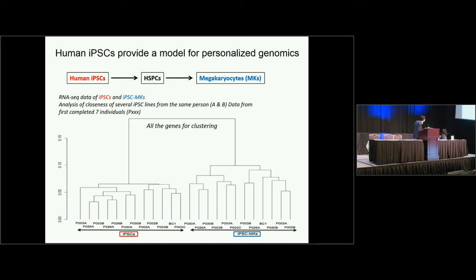The data I'm showing is RNA sequencing data from iPS cells and iPS cell-derived megakaryocytes from seven individuals, where some individuals contributed multiple iPS cell lines. The clustering shows that iPS cells from the same individual are very similar to each other, but you see variation from one individual to another. The gene expression pattern of iPS cell-derived megakaryocytes is very different from iPS cells, but you still see the tremendous impact of the individual's genome. This emphasizes that when doing disease modeling, you really have to consider what the isogenic control is — and genome editing provides the precise way to determine whether a specific mutation is responsible for the observed phenotype.